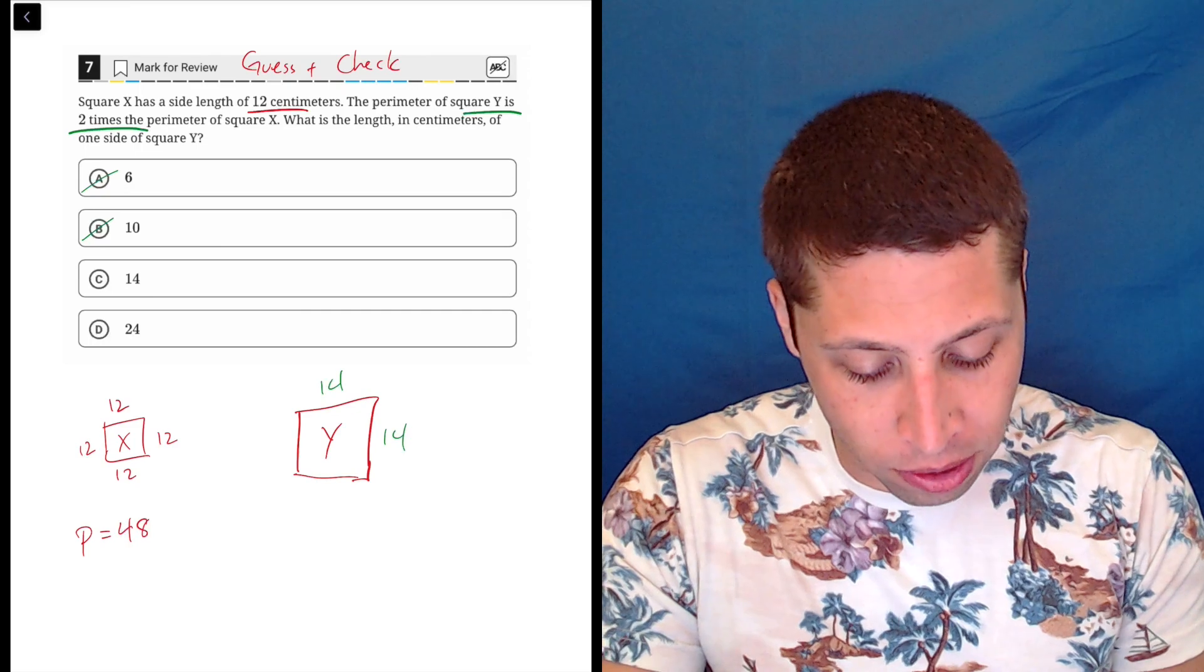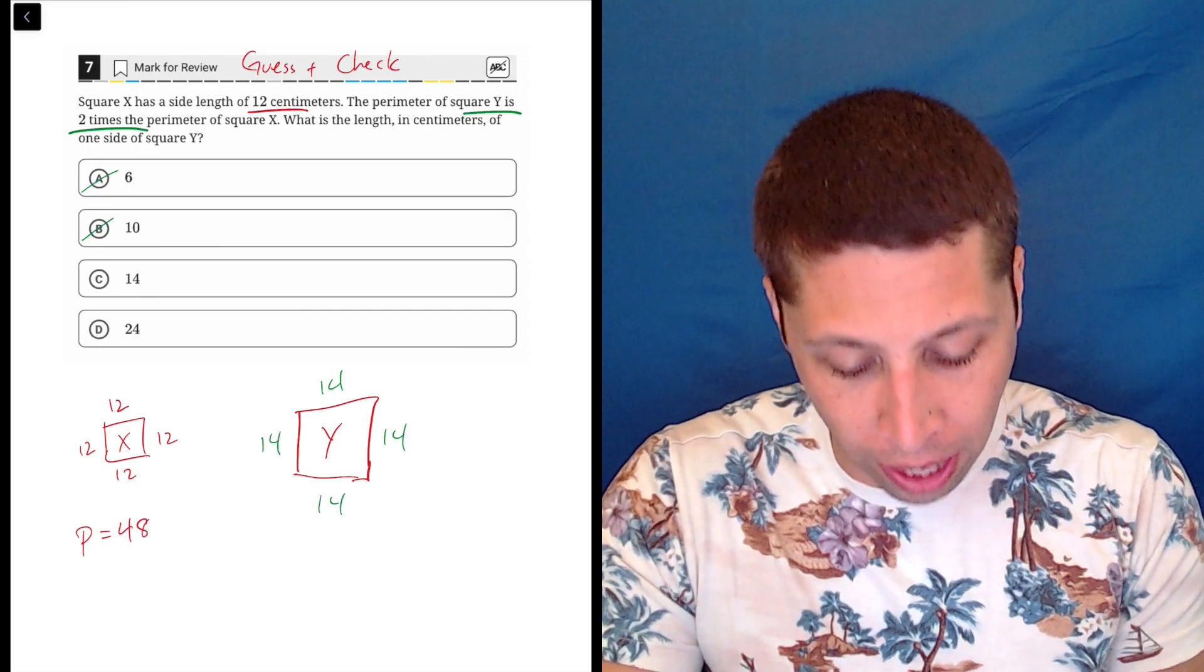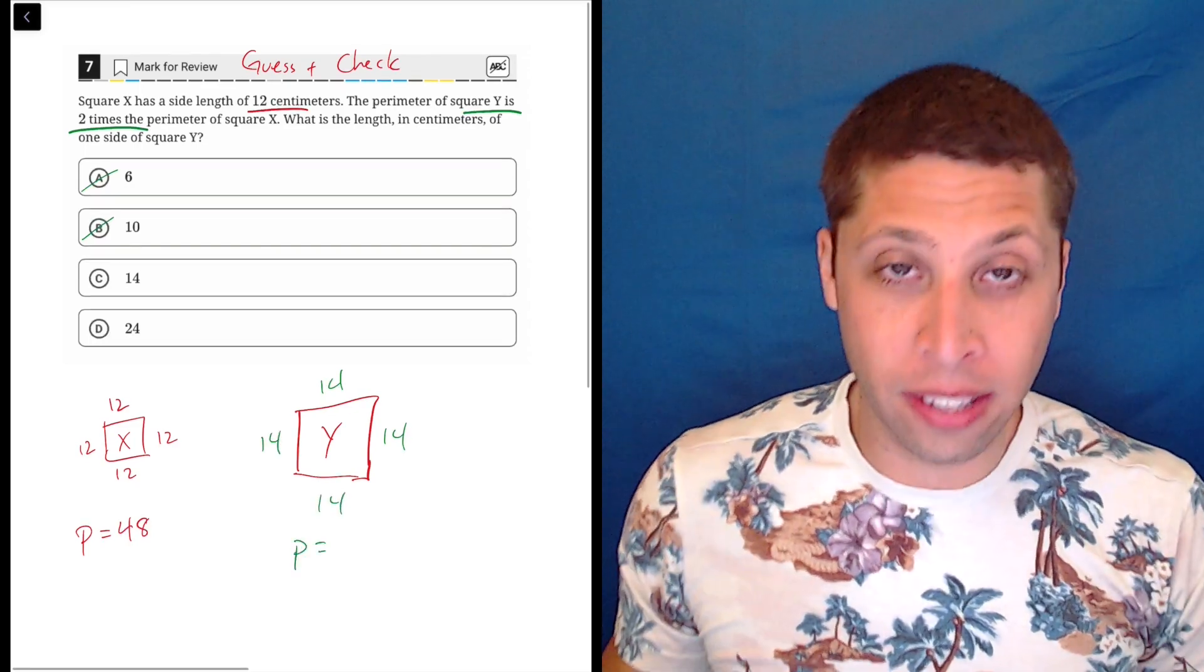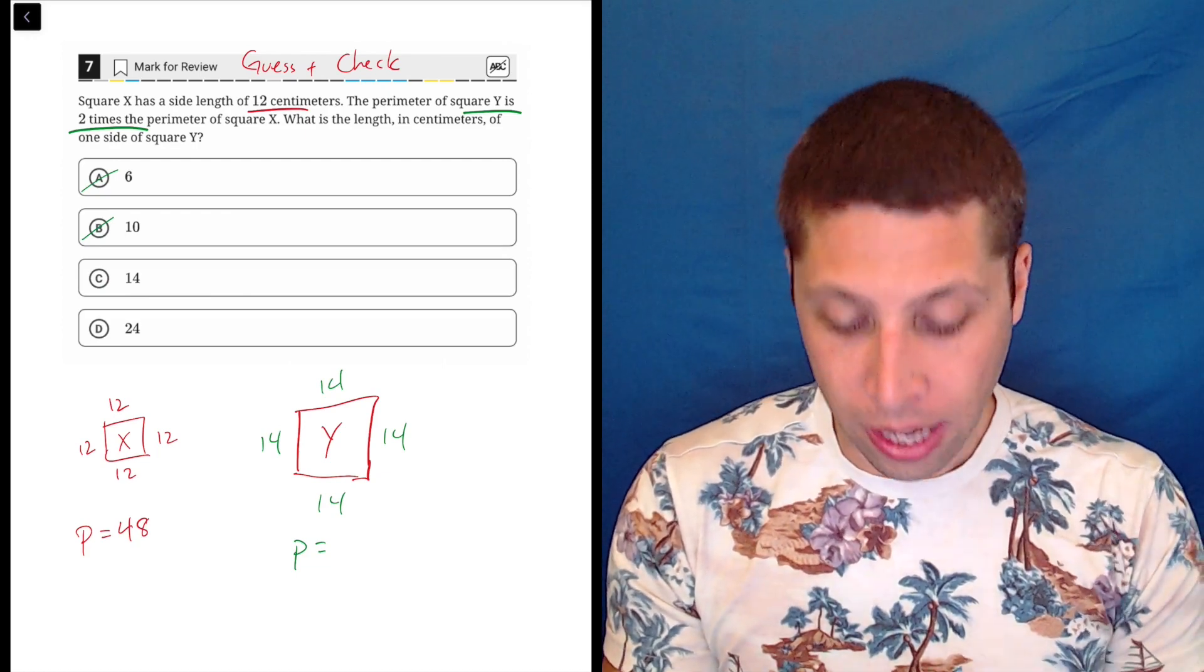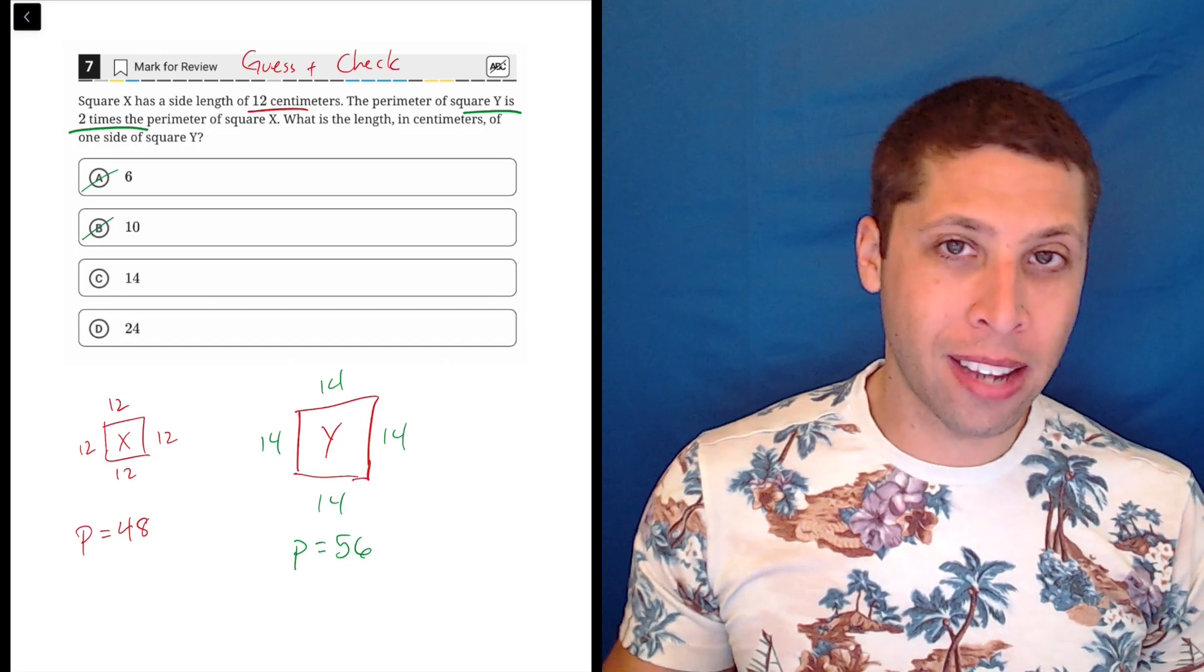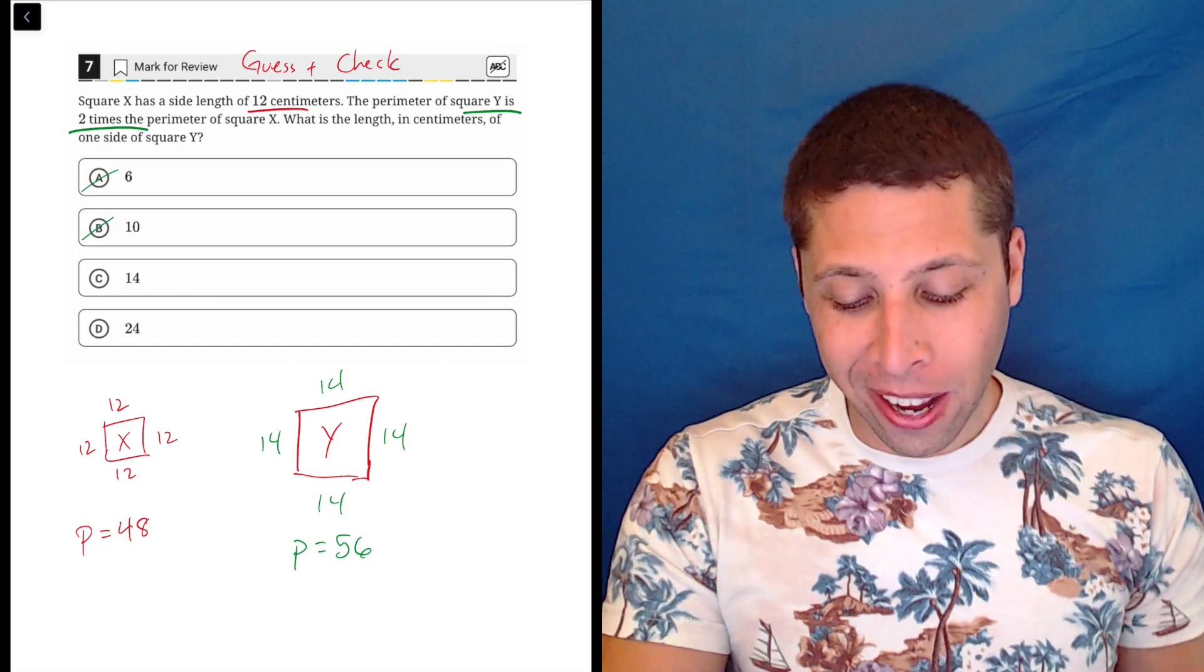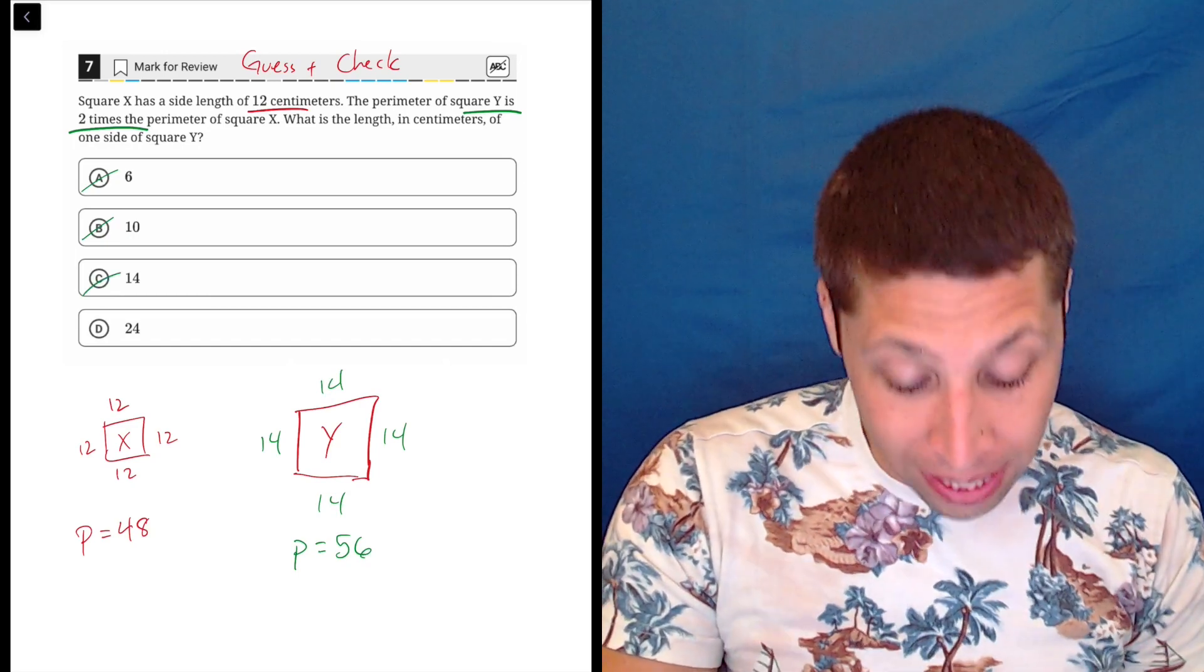So let's just try the 14, right? So if this is 14, we can see, okay, 14 times four is going to give us a perimeter of, let's just use the calculator, four times 14 is 56. So it's bigger, but it's not bigger enough, right? So we probably can just pick D at this point.